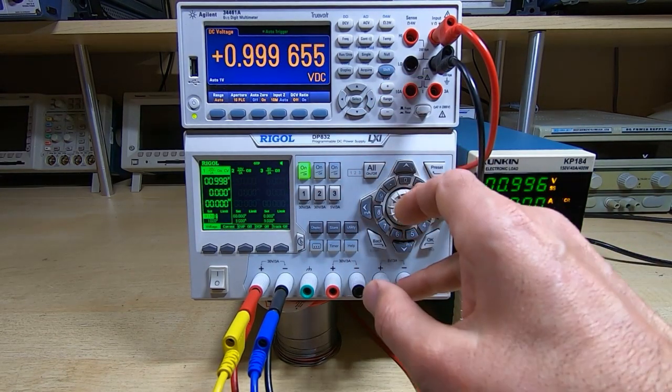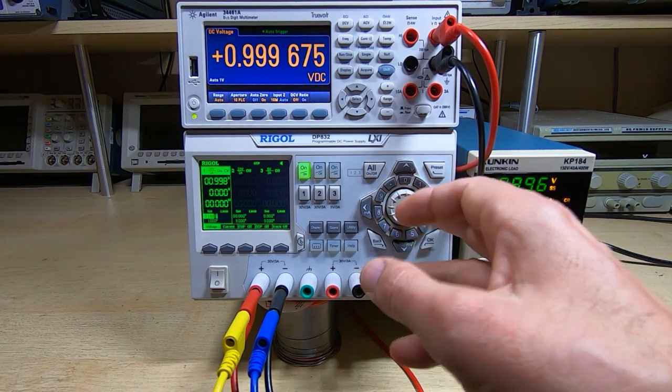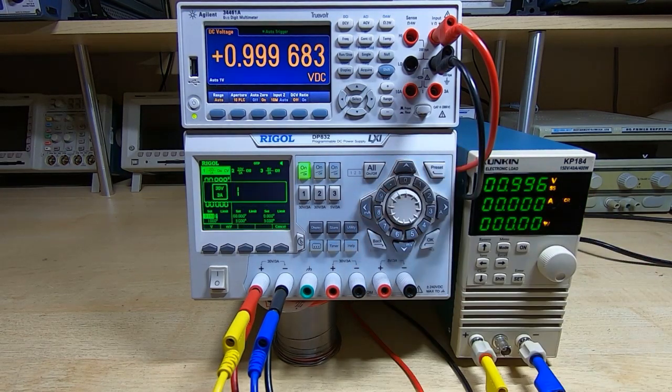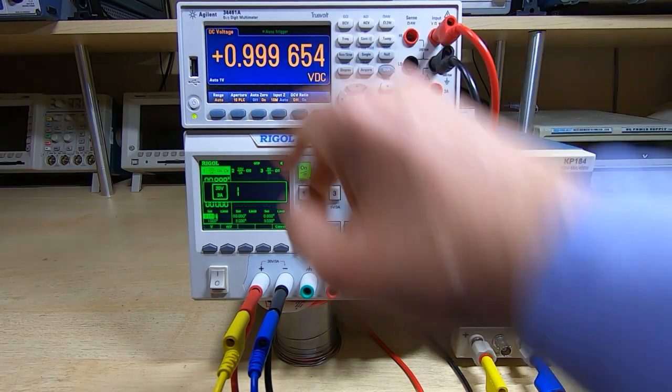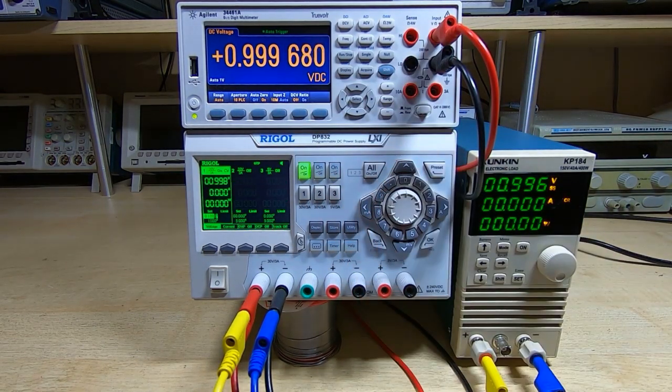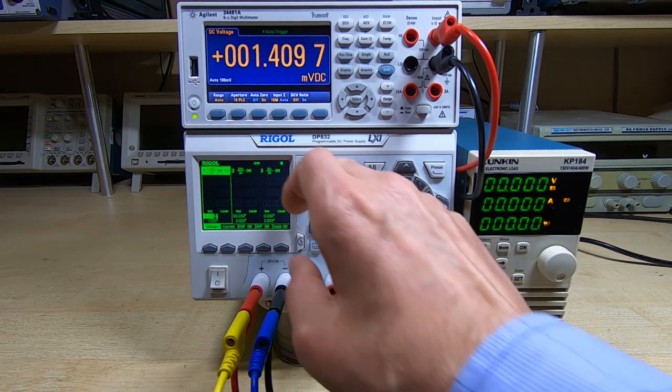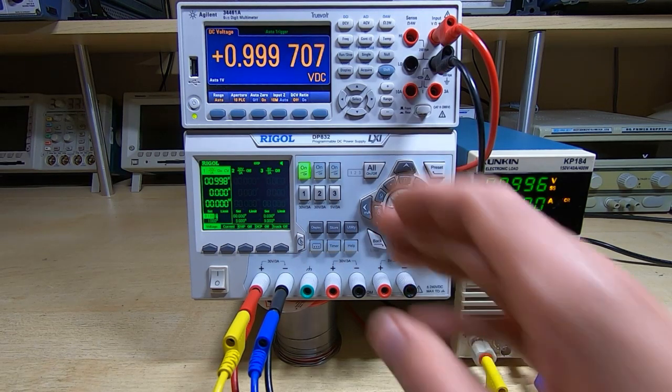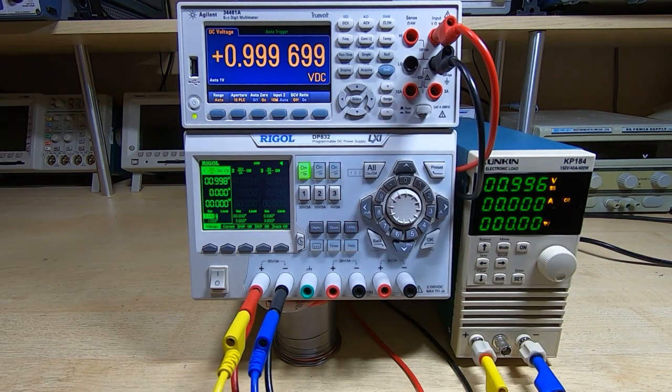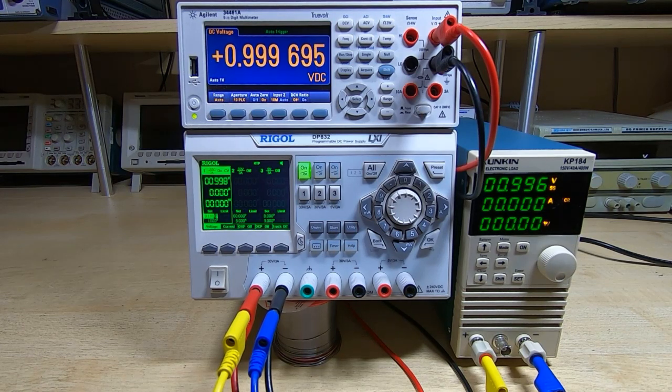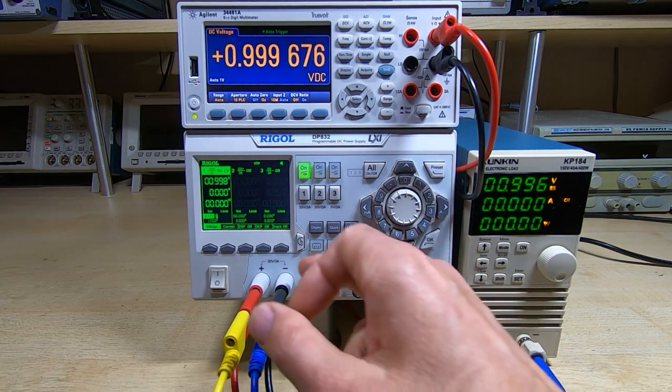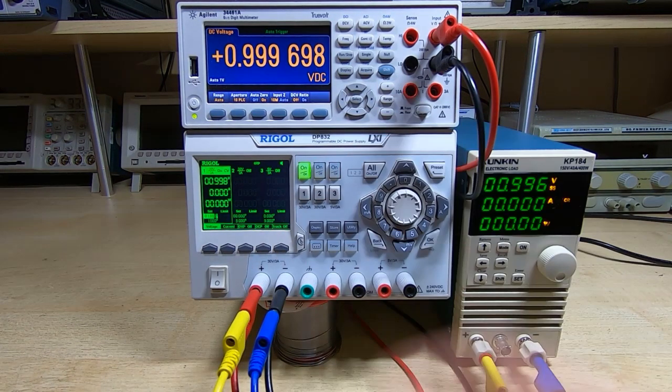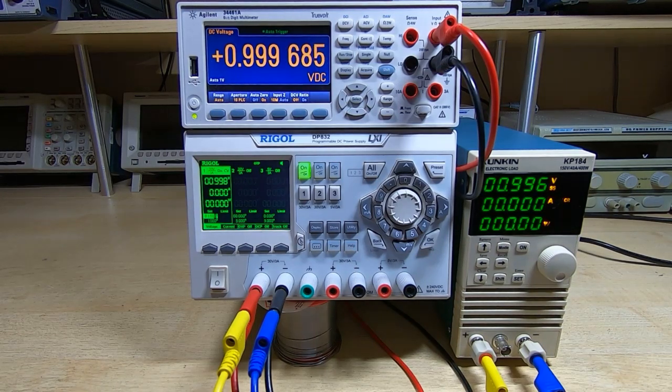Whereas now, every time I set one volt, I'm getting something very close to one volt. Previously, had I selected one volt again, I'd get a slight change in the reading, whereas now it's staying exactly the same. Same when I turn it on and off—it's coming back with pretty much exactly the same output. As I say, it was fairly stable in terms of the noise. Output was fairly low from the voltage output terminals, but it just couldn't be set particularly accurately.